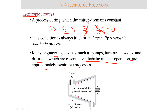The isentropic process is a process that can be used to equate the maximum possible efficiency, because we assumed that the entropy generation is zero. So if the entropy change is zero, that means the entropy at the final state is equal to the entropy at the initial state.